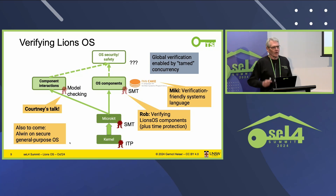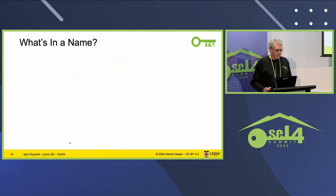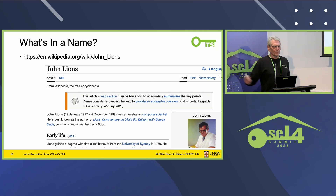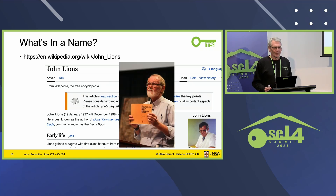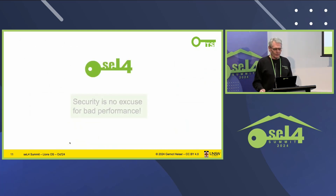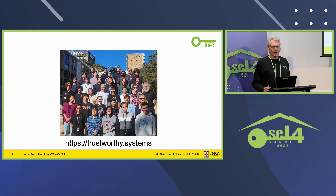Elwin will also talk about a completely separate project, the general-purpose OS. In case you're wondering why Lions OS — it's named after John Lyons, a professor at UNSW known for the Lyons book that taught many people about operating systems. Last week we had the John Lyons distinguished lecture with Hypo Chen from Shanghai Jiaotong, who put up the Lyons book he used to learn operating systems. Stay tuned for the other trustworthy systems talks. And as I always keep saying, our model is: security is no excuse for bad performance. Thank you very much.